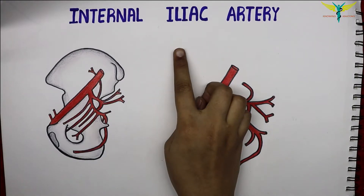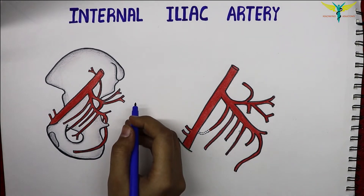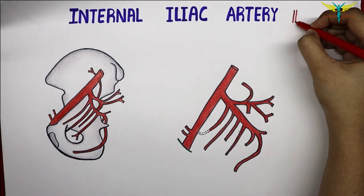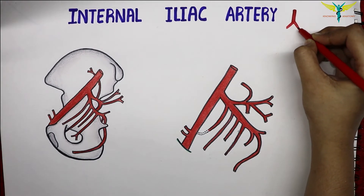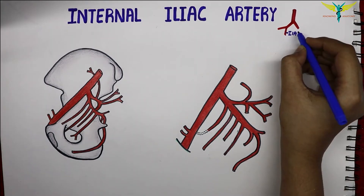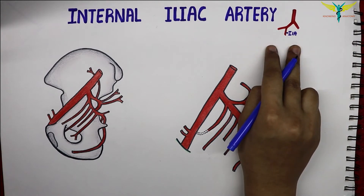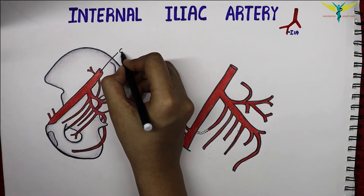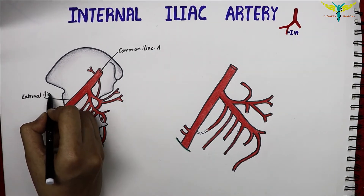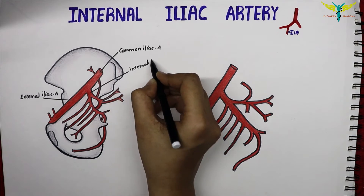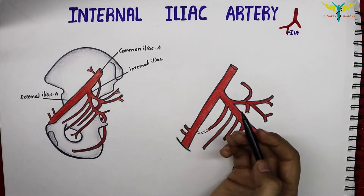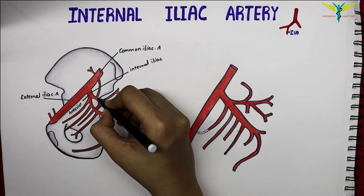In this video, let's learn about the internal iliac artery. The internal iliac artery is the smaller of the two terminal branches of the common iliac artery. The abdominal aorta divides into the common iliac arteries, and the common iliac artery divides into the internal and the external iliac arteries. The internal iliac artery divides into the anterior and the posterior divisions near the greater sciatic foramen.